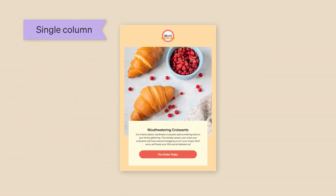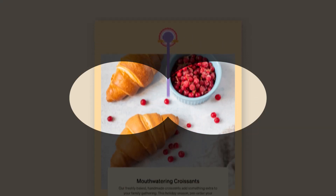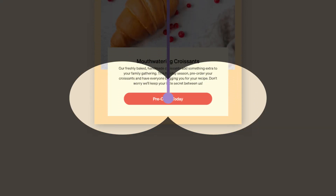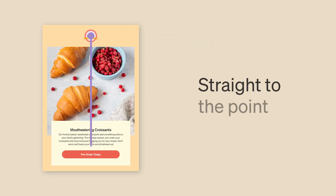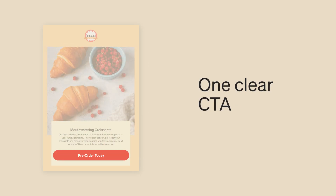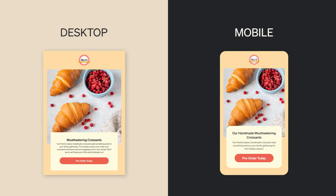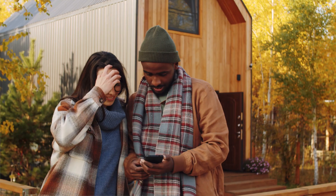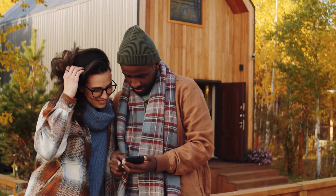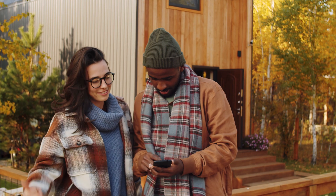Finally, we have the single column layout. It's the most basic layout, but highly effective. The single column layout is straight to the point, allows imagery to really take the lead, and there is one clear CTA. It also renders well across all devices, so if a lot of your customers are viewing emails on their phones, this is a great layout to use.